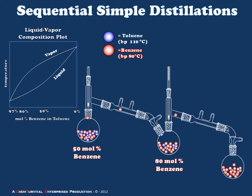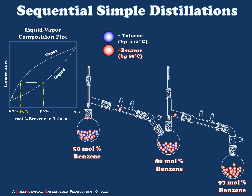The reason for this can be seen in the liquid-vapor composition plot. Beginning with a 50 mole percent liquid, we expect to collect an 80 mole percent vapor. If that vapor is condensed and redistilled, we start from the liquid portion of that 80 percent line, getting another step along the liquid-vapor composition plot, reaching approximately 97 mole percent benzene. However, this is a very large apparatus requiring a great deal of time to build and energy to run — and there is actually a much easier way to accomplish the same effect.